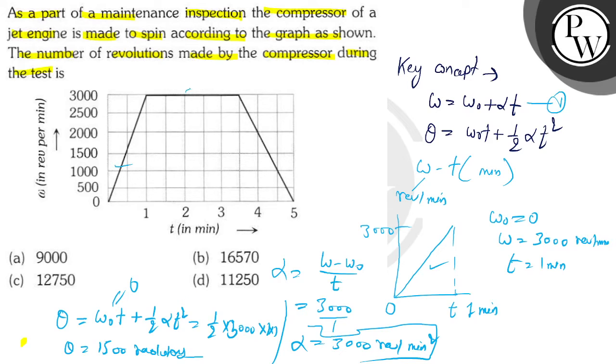Now we count for this part. In this part, we can see that in the next 3 minutes omega is constant, and here the revolution is omega into t. Omega value is 3000 multiplied by 3 minutes, so here it will be 9000 revolutions.